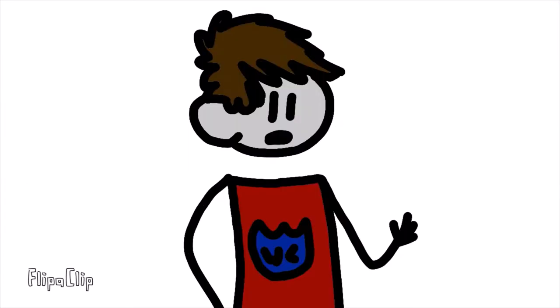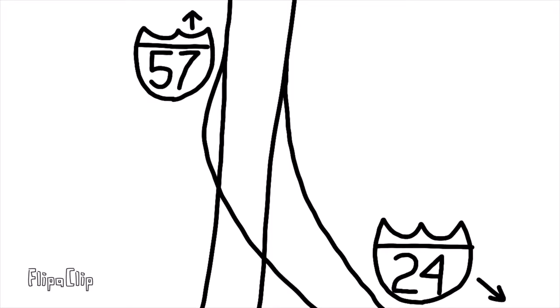I-57 keeps going south, where it has exits for Benton, West Frankfurt, there is no East Frankfurt, and Marion. South of Marion, 57 interchanges with its last interstate in Illinois, where it has a one-way exit for I-24, which will take you to Paducah, Kentucky.